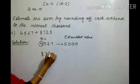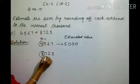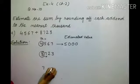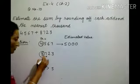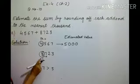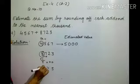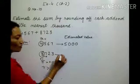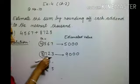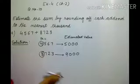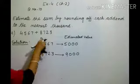The estimated value of the first number is 5,000. Now we will estimate the second number: 8,723. Circle the thousands place digit, which is eight. Check the digit to its right, which is seven. Compare with five — seven is greater than five, so we add one to the circled digit. Eight plus one is nine, and the remaining three digits turn to zero. So 8,723 will be rounded to 9,000. Now erase the circle.